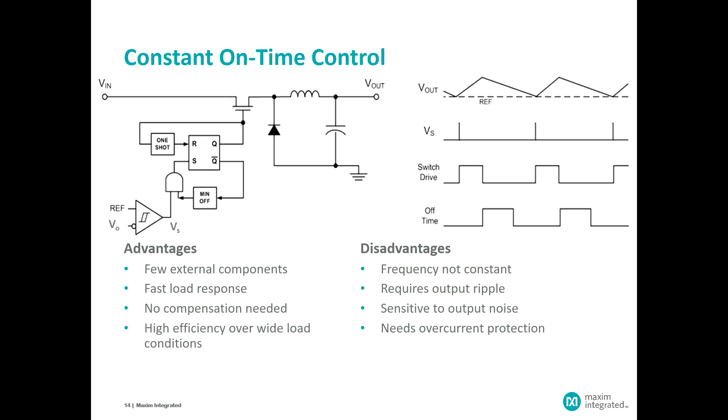The disadvantages are, again, the frequency is not constant. We do demand some output ripple waveform, and that usually is a small value. So there's a potential for some signal and noise issues in keeping the circuit operating in a stable mode. And we don't have any inherent current protection, so we'd have to provide short circuit protection with separate circuitry.